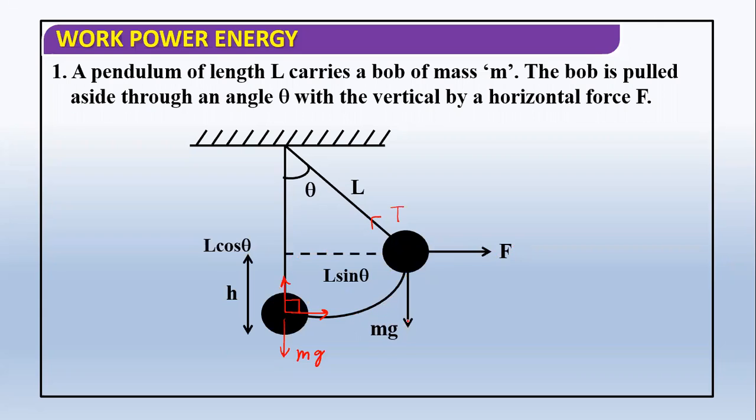For work done by gravity, we have W equals negative mg times delta h. Delta h is this height. The total length is L, and up to this point is L cos theta.